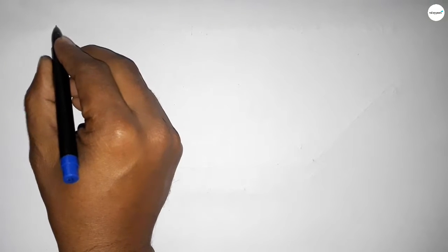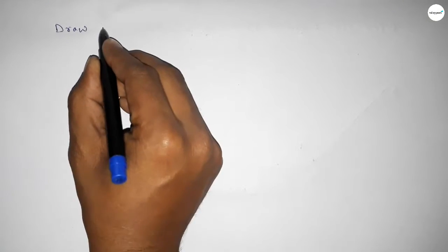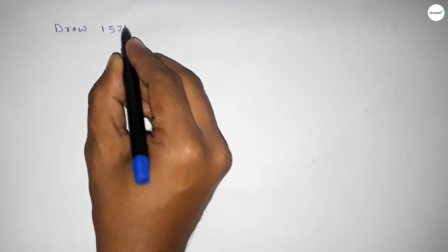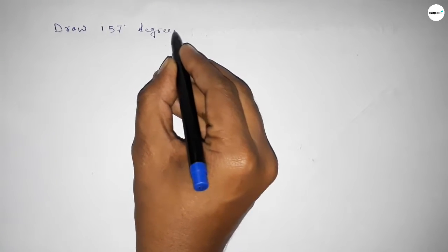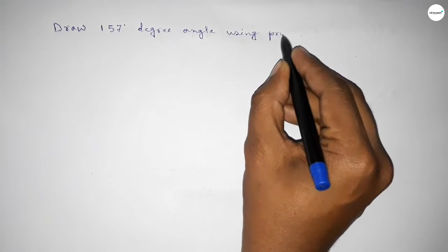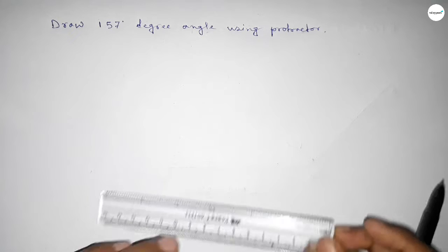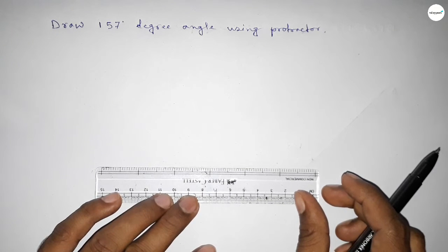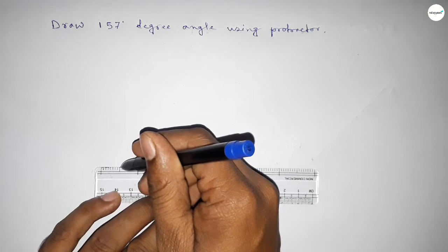Hi everyone, welcome to SI share classes. Today in this video we have to draw a 157 degree angle using a protractor. Let's start the video. First of all, we have to draw a straight line of any length.